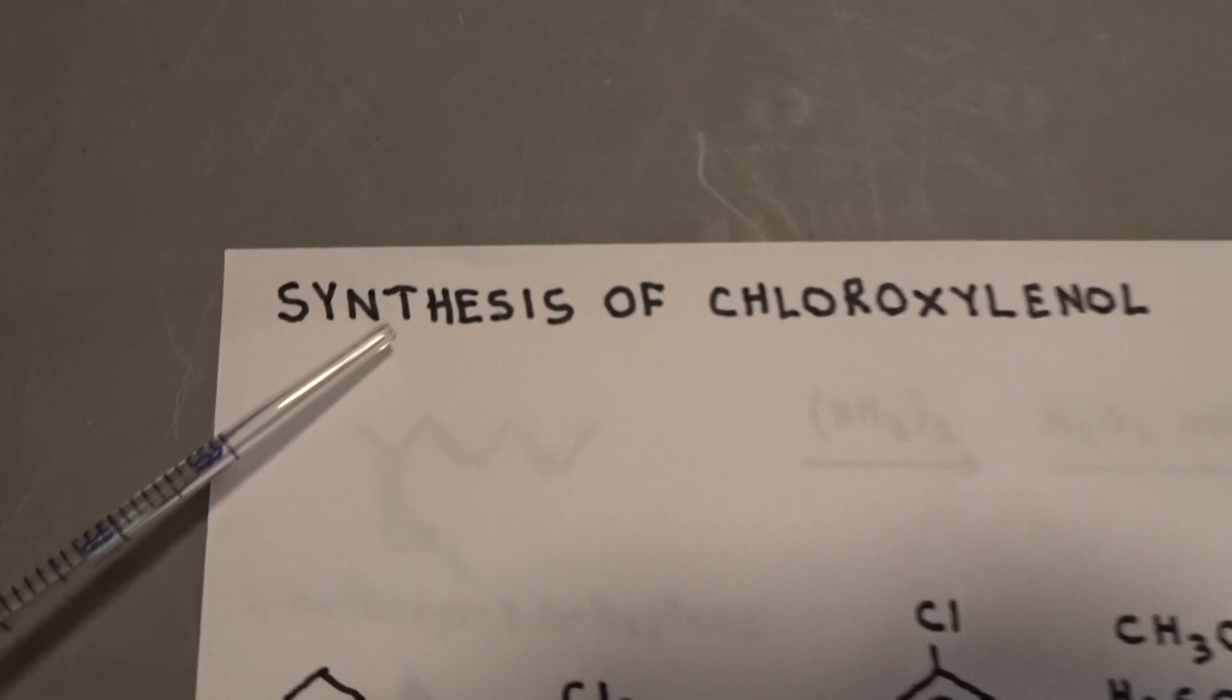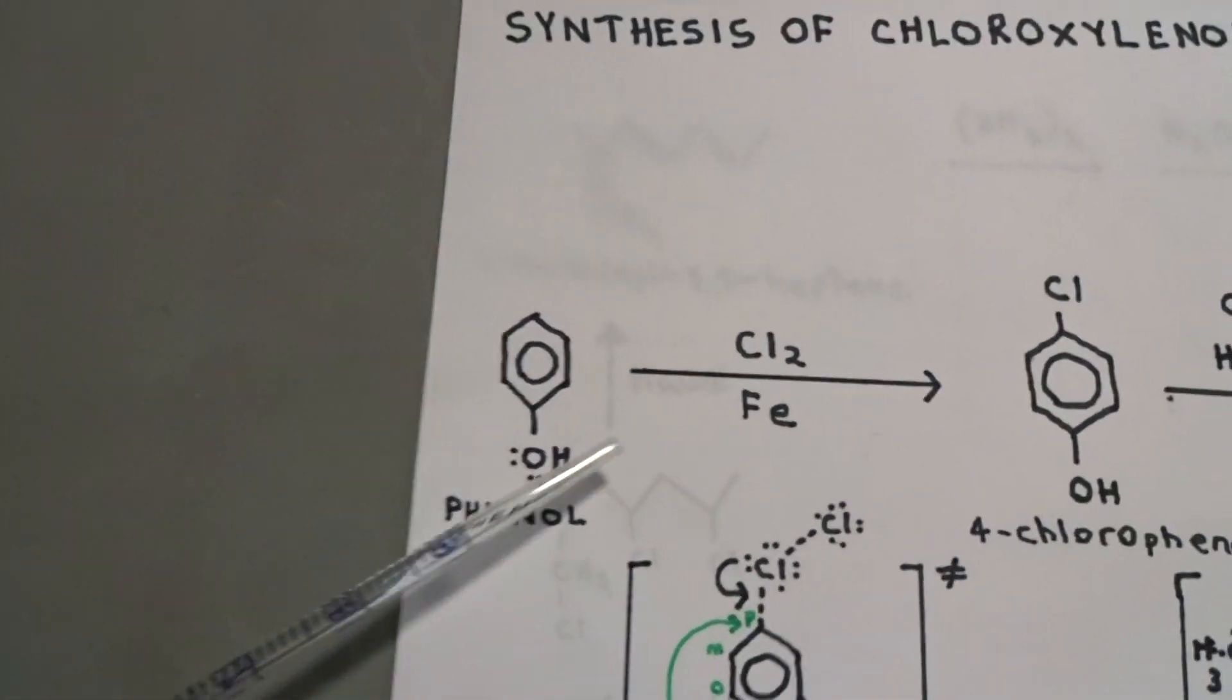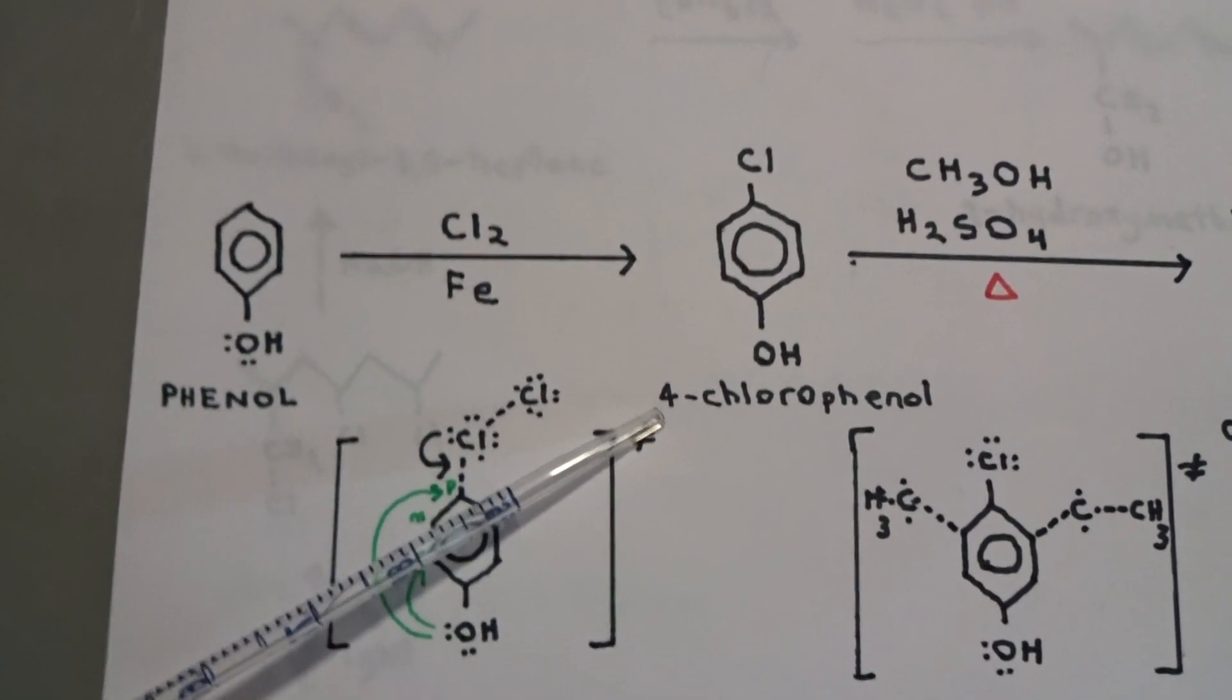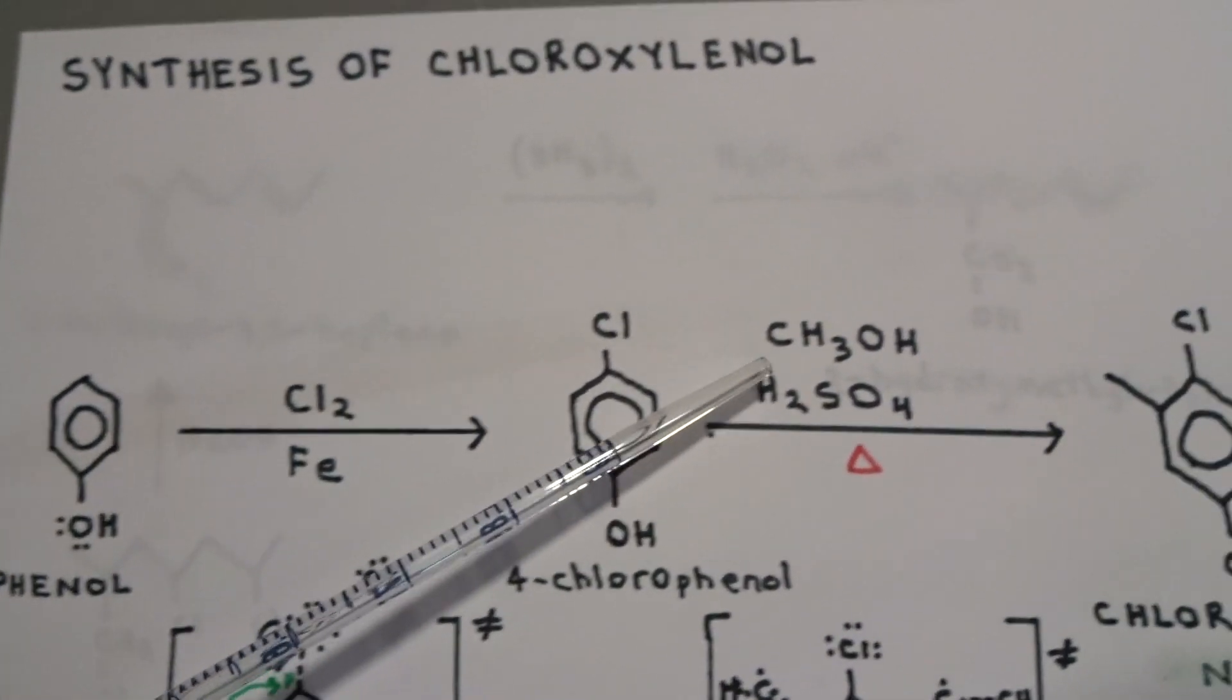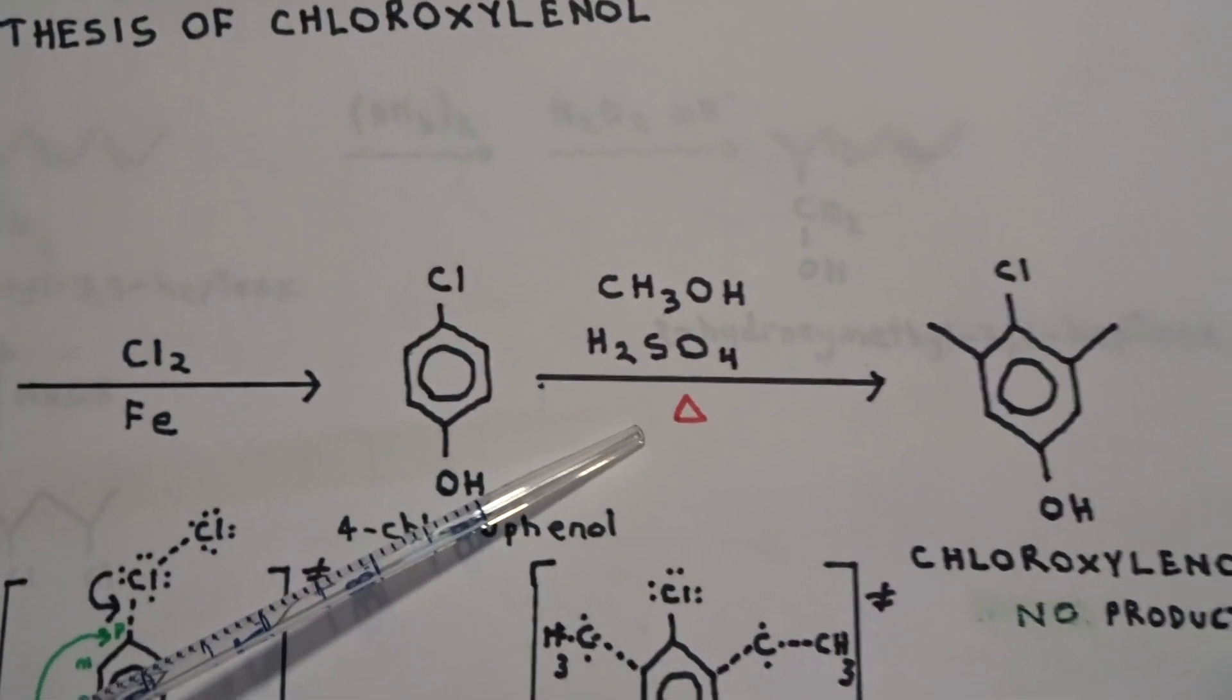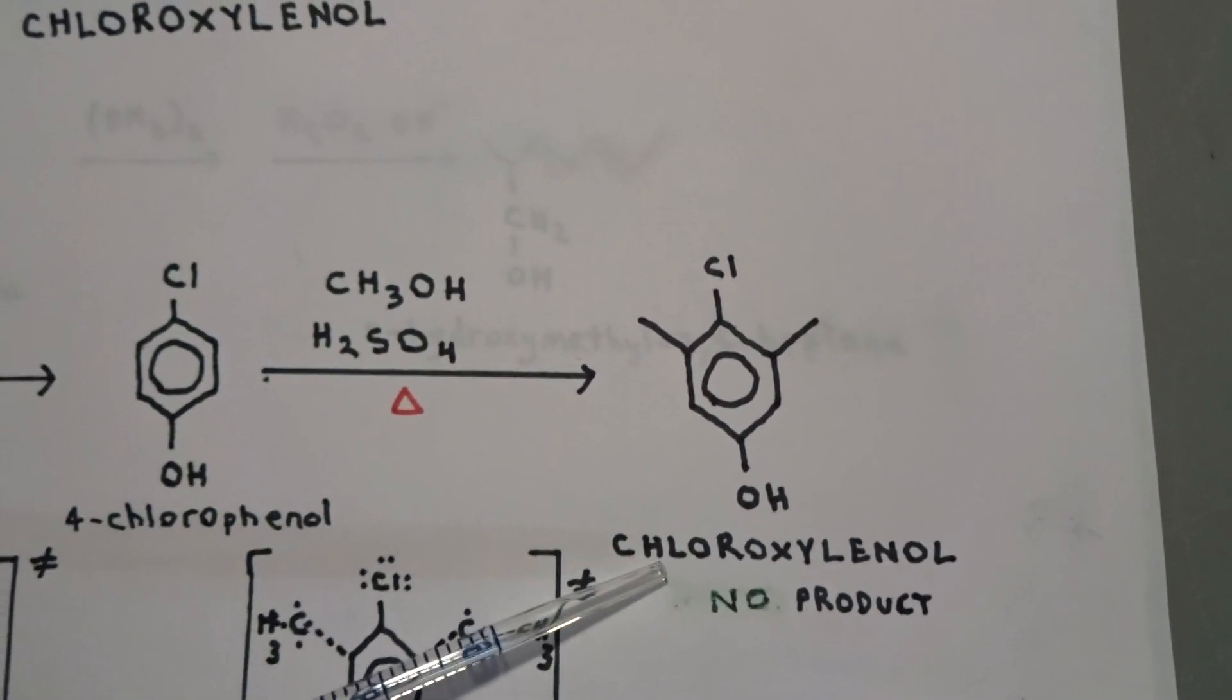Here we see the synthesis of chloroxylenol. Let's start from phenol. React phenol with chlorine gas under the presence of the catalyst iron, and you will attach a chlorine to the benzene ring for 4-chloro-phenol. Then, do a dehydration reaction with methyl alcohol with sulfuric acid with some heat, about 125 degrees Celsius. In the presence of light. And we will attach two methyl groups to the benzene ring from a dehydration reaction to yield the product chloroxylenol.